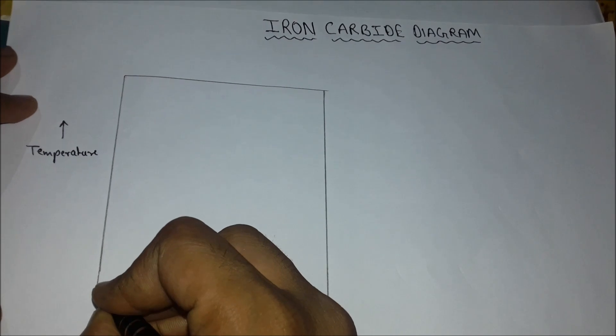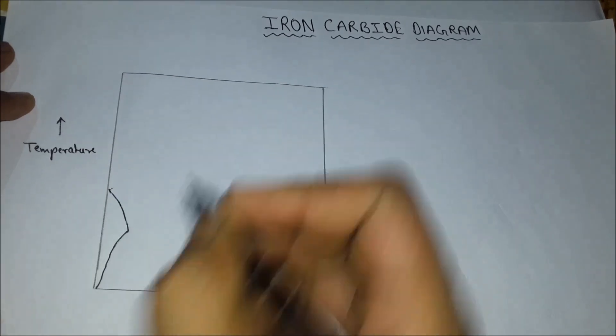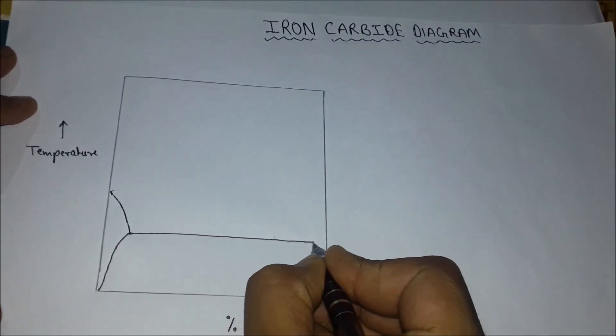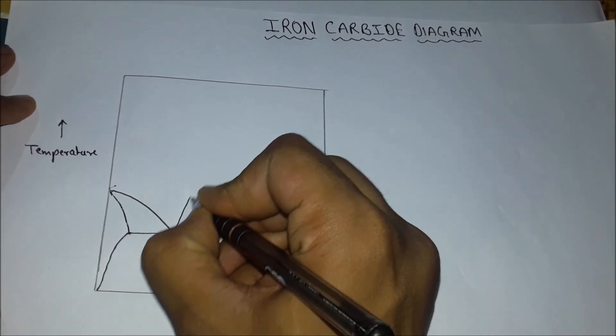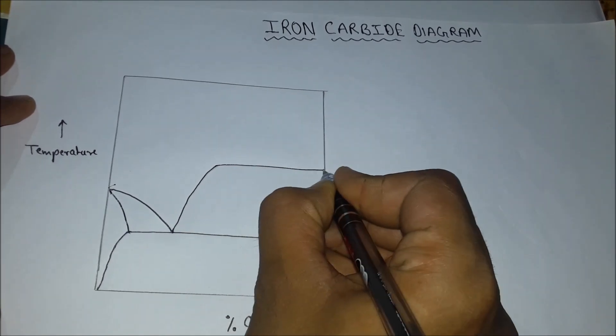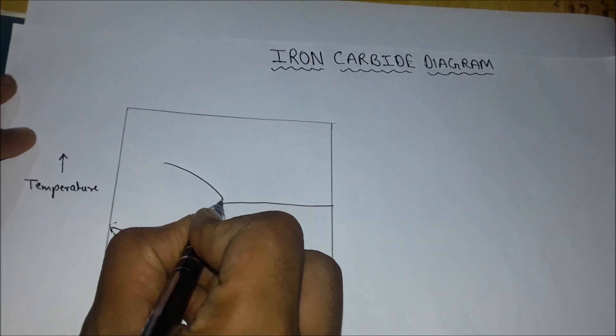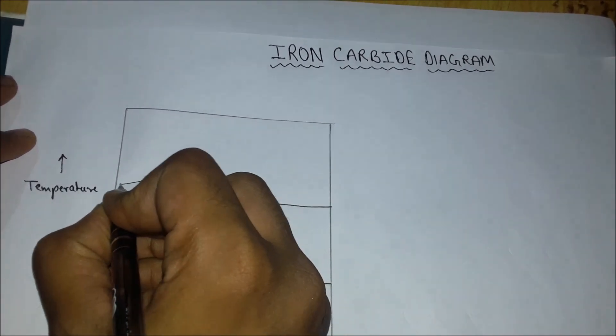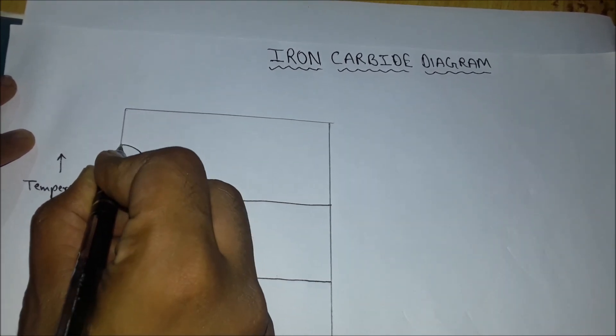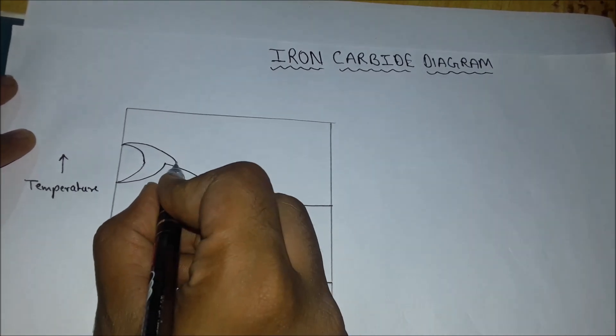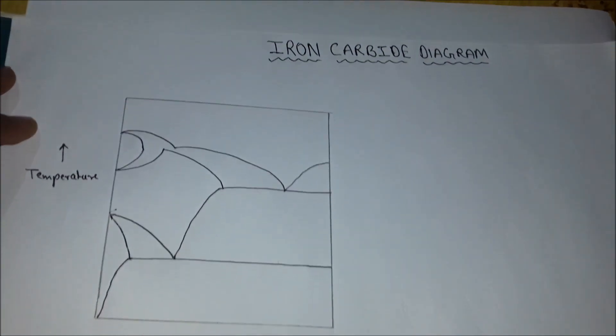So here we will start. How to make an Iron-Carbon Diagram. So here is the shape of the Iron-Carbon Diagram.